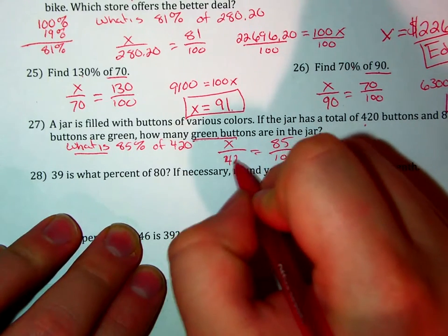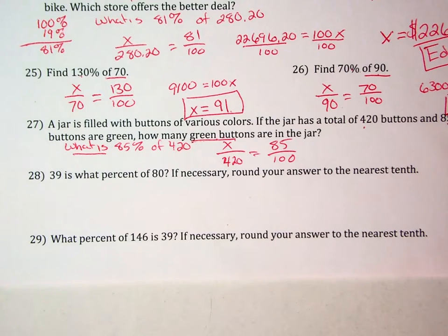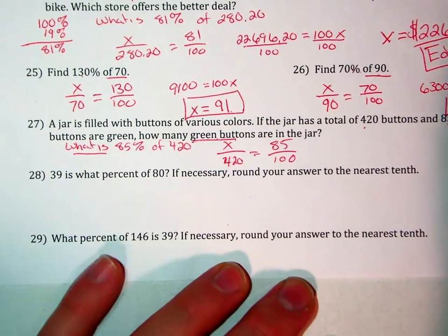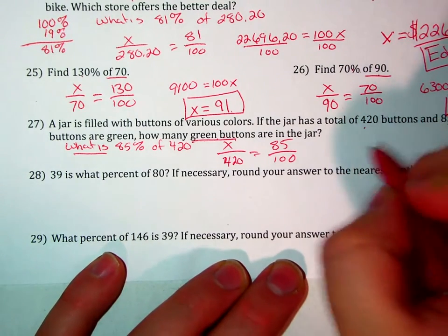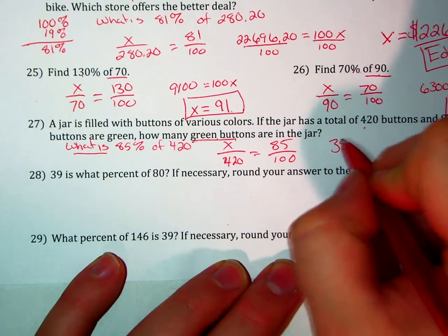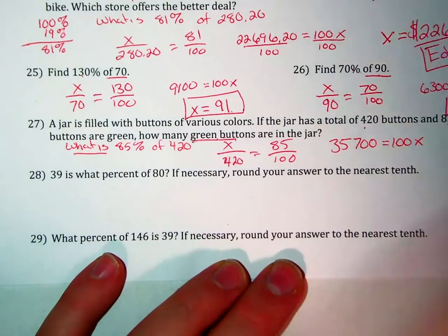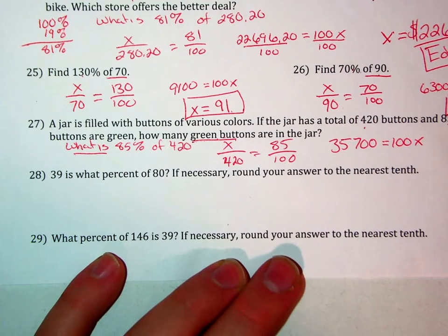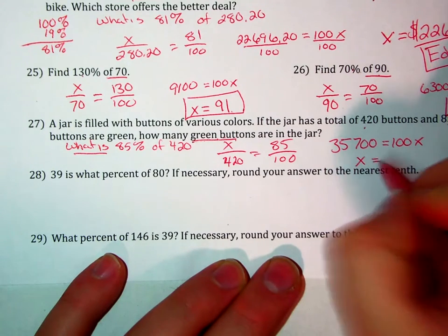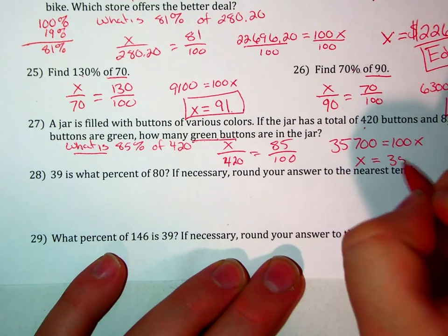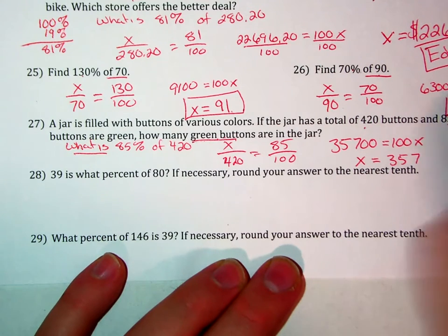Now we cross multiply: 420 times 85 equals 35,700, which equals 100X. Divide both sides by 100, and X equals 357 green buttons.